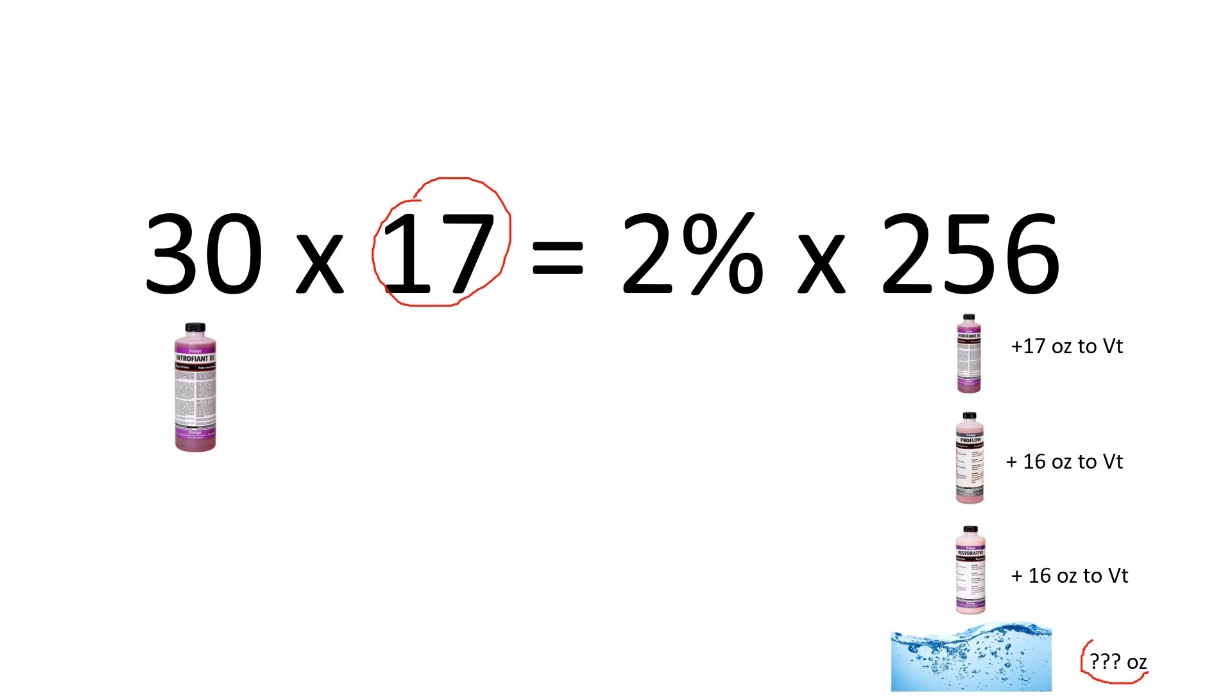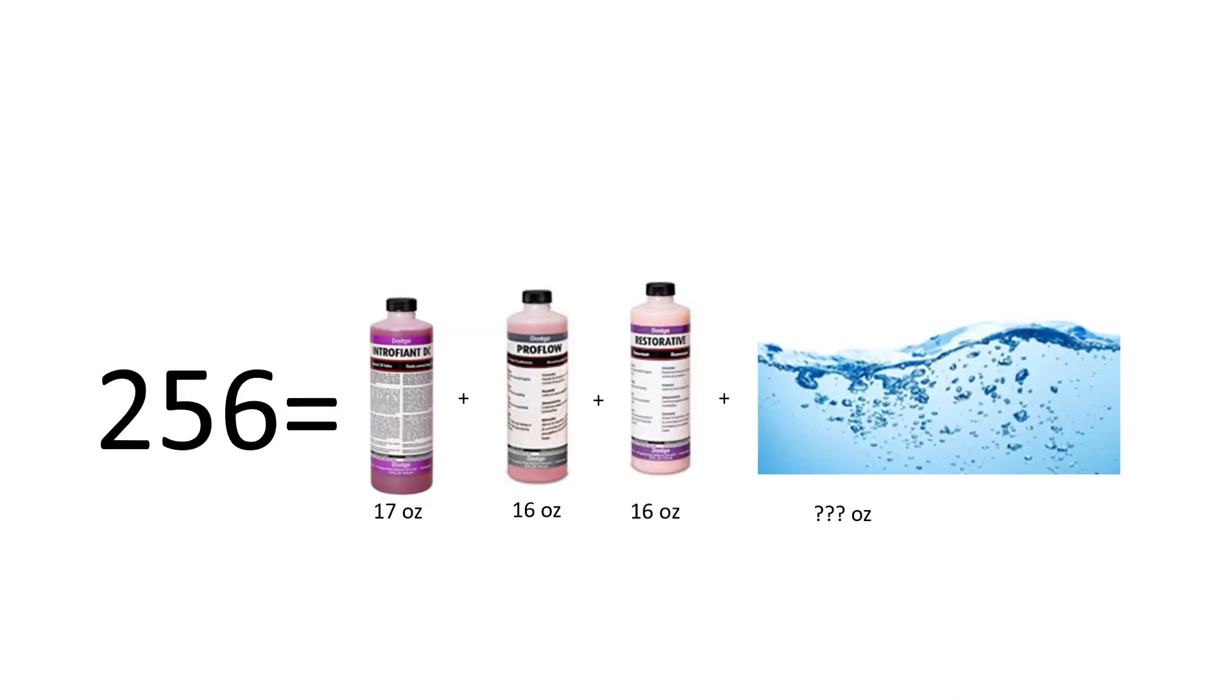However, we still don't know how much water we're going to need. So how do we figure that out? We know that 256 ounces is made up of 17 ounces of arterial fluid, 16 ounces of ProFlow, 16 ounces of Restorative, and we don't know yet how much water. So we're going to simply subtract these amounts from 256. We will subtract 17 ounces from 256, subtract 16 ounces from 256, subtract another 16 ounces from 256 to arrive at the remaining amount of water: 207 ounces.